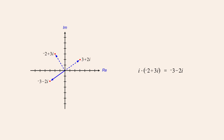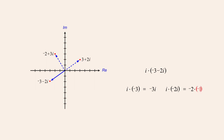If we then take that result, negative 3 minus 2i, and multiply again by i, we get i times negative 3, which is negative 3i, and i times negative 2i, which is negative 2i-squared. Since i-squared is negative 1, negative 2i-squared is negative 2 times negative 1, or positive 2. So the result of this multiplication is 2 minus 3i. Once again, the resulting vector is the same length, rotated counter-clockwise by 90 degrees.